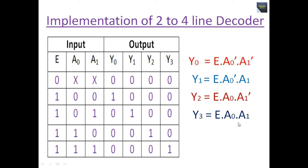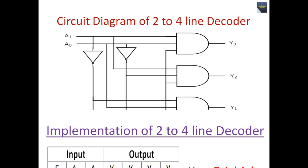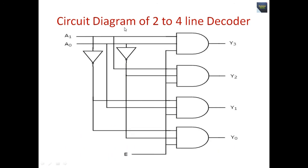Each output has one minterm, so there are four minterms in total. We can implement these four minterms using four AND gates with three inputs each and two NOT gates.